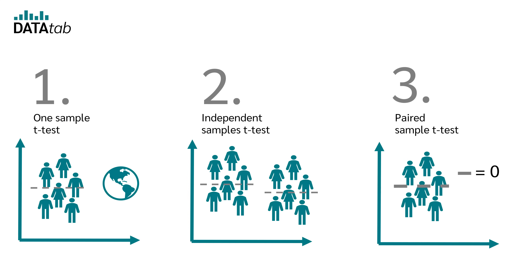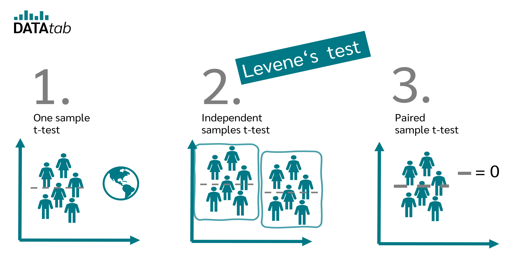In the case of an independent t-test, the variances in the two groups must be approximately equal. You can check whether the variances are equal using Levene's test. For more information, watch the video on Levene's test.